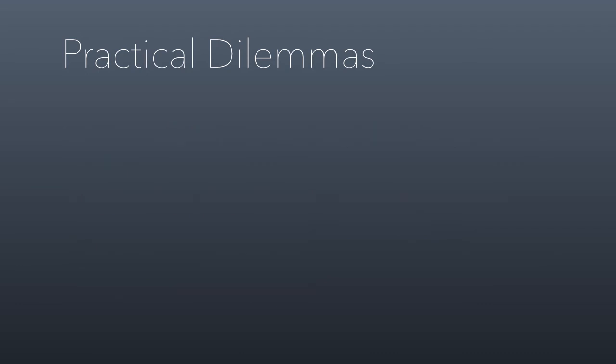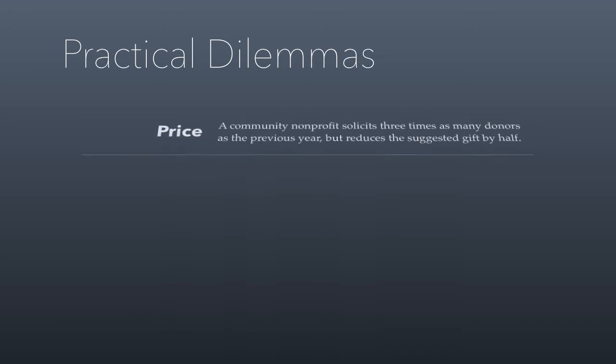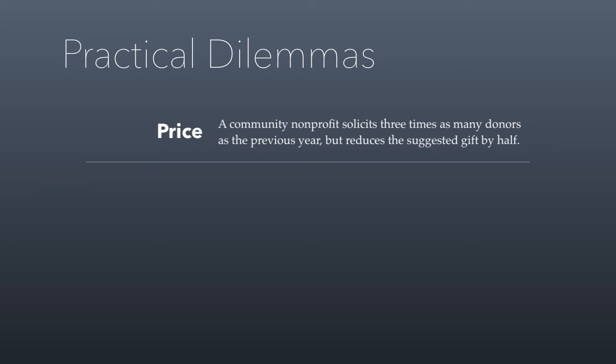To illustrate examples of changing the supply curve through four ways: price would be a community nonprofit soliciting three times as many donors as the previous year by reducing the suggested gift by half. A suggested gift has a psychological impact, and if you set it too high, donors will simply turn you down because it's too pricey. One way to reduce the price of your altruistic opportunity is reducing the suggested gift. If you do that and broaden your market reach, you'll make more money through fundraising.